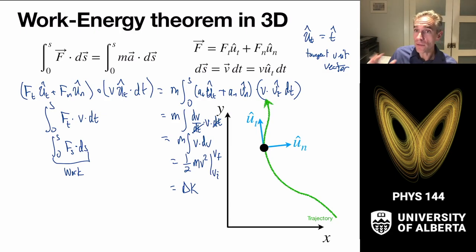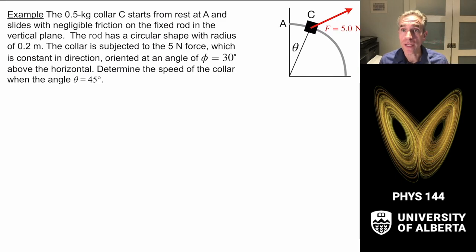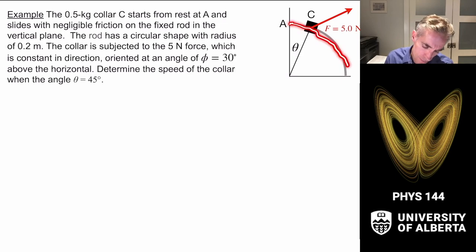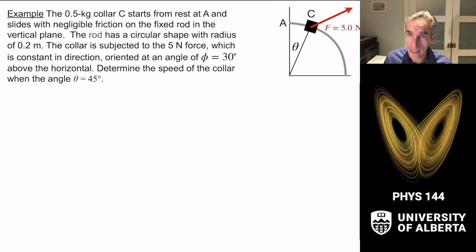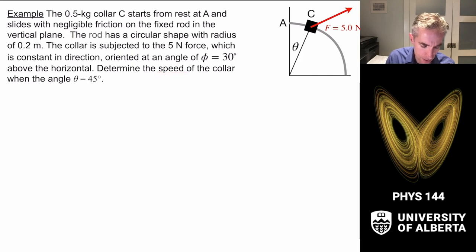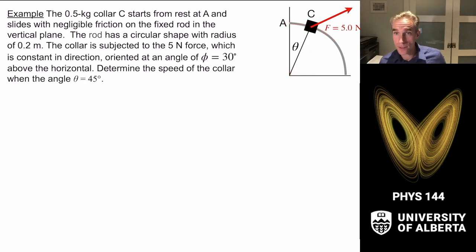Let's apply the work-energy theorem in higher dimensions. A collar — a small ring on a quarter-circle wire of radius R = 0.2 m — has a force of 5 N acting at angle φ = 30° above horizontal. We want to determine the speed of the collar as it moves from θ = 0° down to θ = 45°.